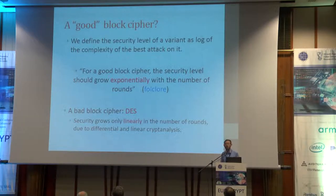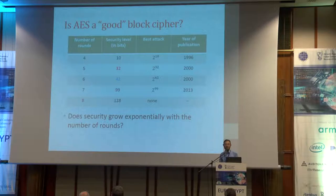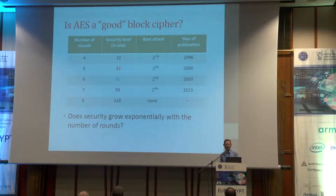What is a good block cipher? We know AES should really be a good block cipher — all of us believe that this is secure. Is AES a good block cipher by this definition? Let's look at the numbers of rounds and the best known attacks on these numbers. The security level of AES increases: AES has 10 rounds; 4 rounds has 10 bits of security, 5 rounds 32, 6 rounds 42, 7 rounds already 99. You can see the year of publication of the attacks — it means AES has been studied for 20 years, and attacks appear quite rarely.